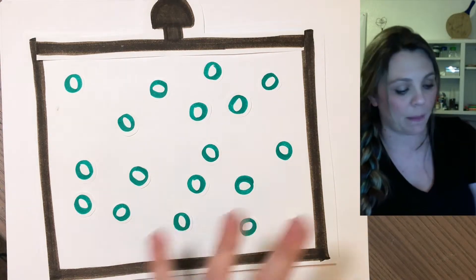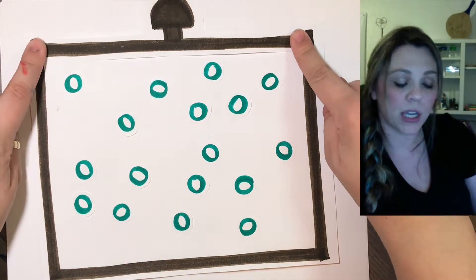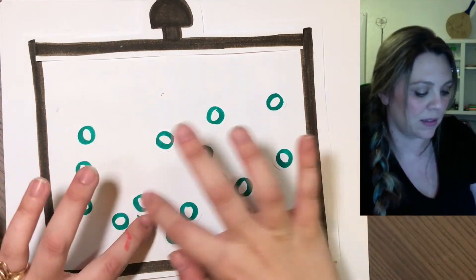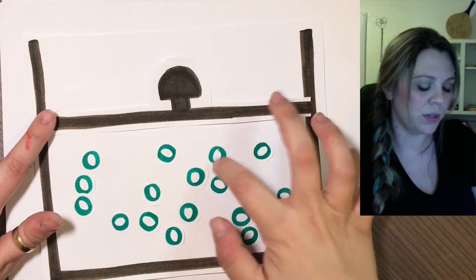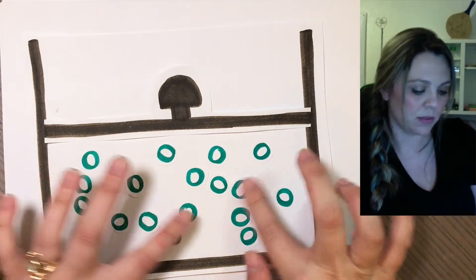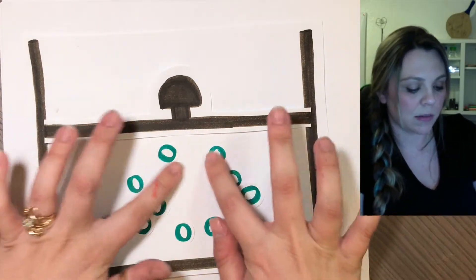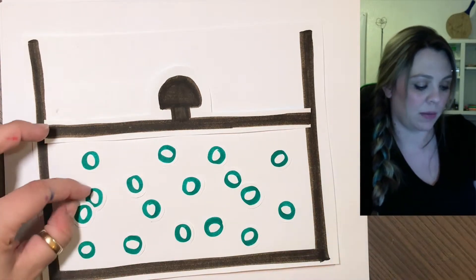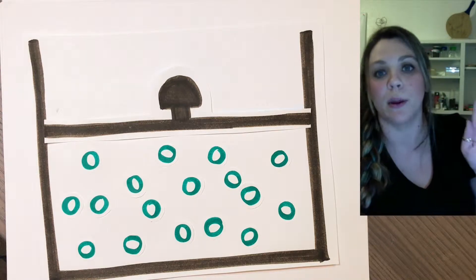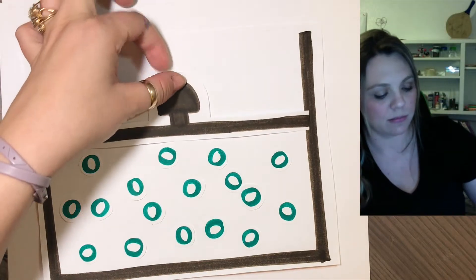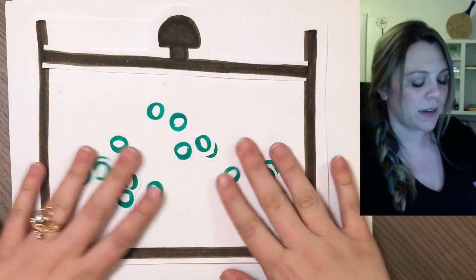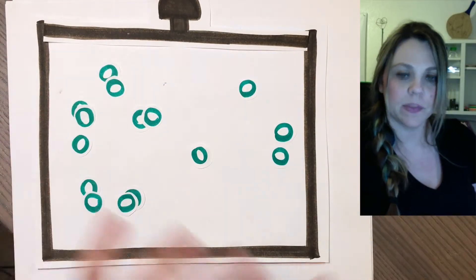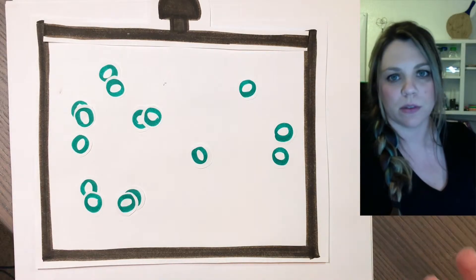If I change one thing about this system it will affect the others. For example, I can compress the gas by pushing the lid down — imagine a syringe being squeezed. If I push the lid down, all I've done is change the volume. I didn't change the amount or remove any particles, but the particles are much closer together now, banging into each other and the container walls a lot more. So if I decrease the volume, I'm actually increasing the pressure.